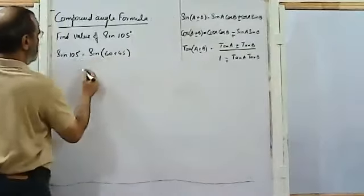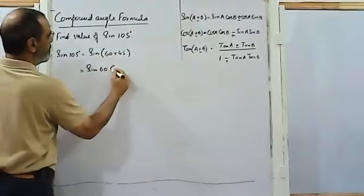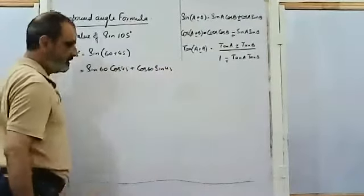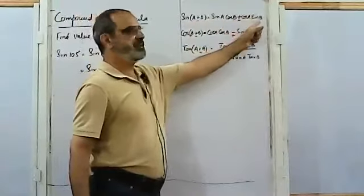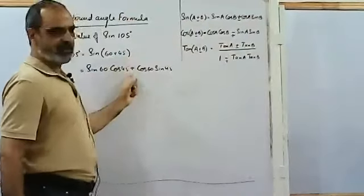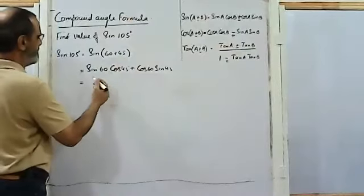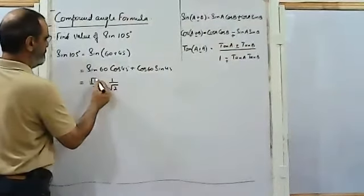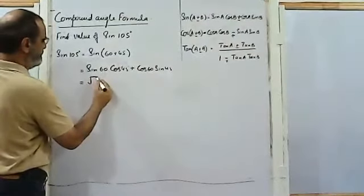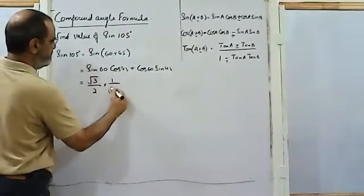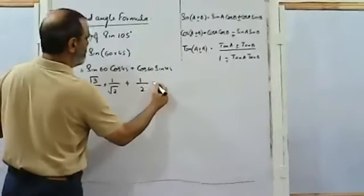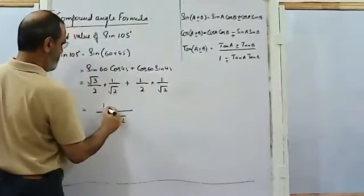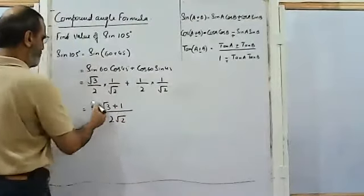Now I can apply the formula. It can be written as sine 60 cos 45 plus cos 60 sin 45 — that is, sine A cos B plus cos A sin B. Since there is a plus sign between the angles, we use the plus sign. Sine 60 is root 3 over 2, cos 45 is 1 over root 2, plus cos 60 is 1 over 2 into sin 45 which is 1 over root 2. Taking LCM as 2 root 2, we are left with (root 3 plus 1) over 2 root 2. So this is our final answer.